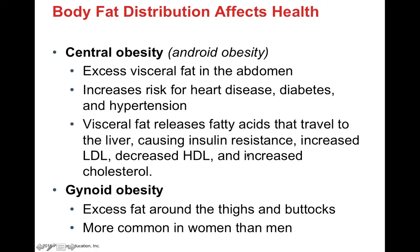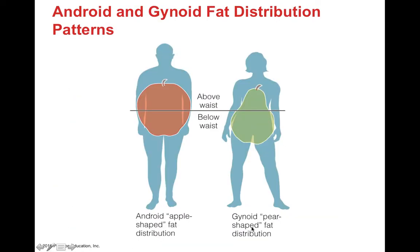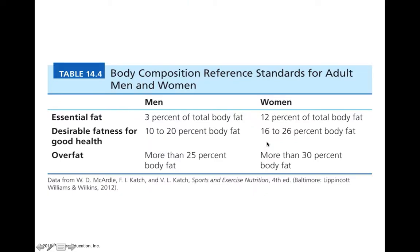Another type is gynoid obesity — excess fat mainly around the thighs and buttocks, the pear shape — which is more common in women. If half your weight is above the waist, that's the apple or android-style fat distribution, whereas women tend to accumulate fat in the hips and legs, ending up pear-shaped or gynoid fat distribution. Essential fat is 3% for men and 12% for women. Desirable fat is 10-20% for men and 16-26% for women. Overfat or obesity is 25% or higher for men and 30% or higher for women.